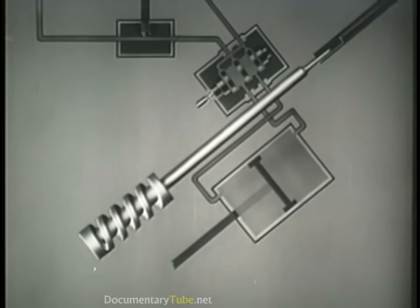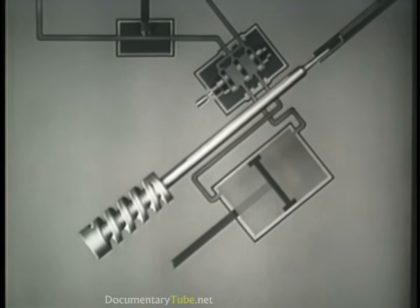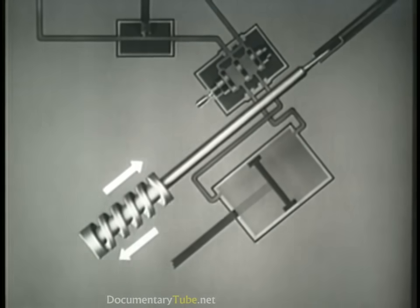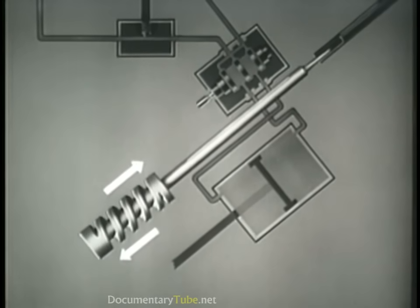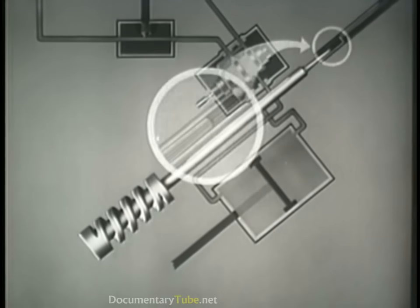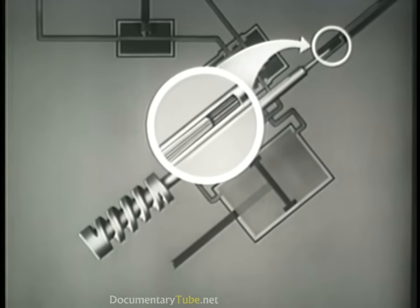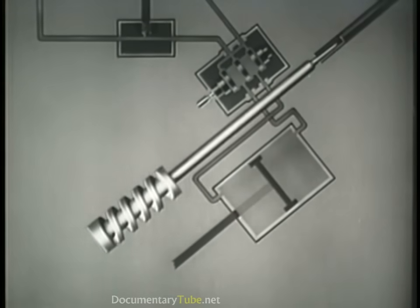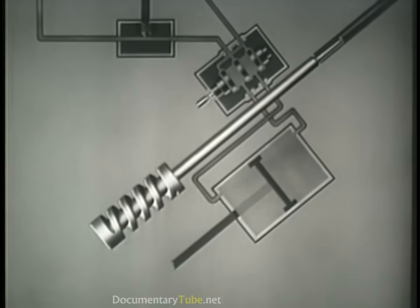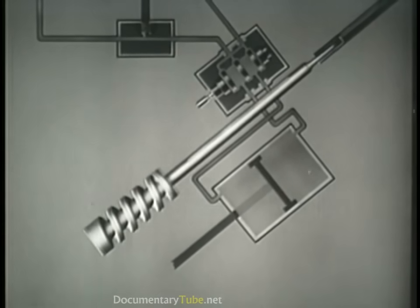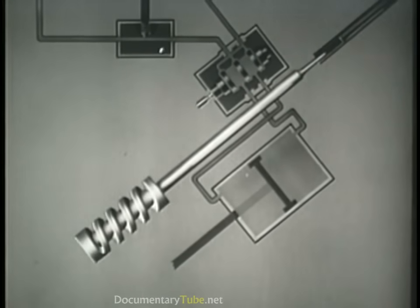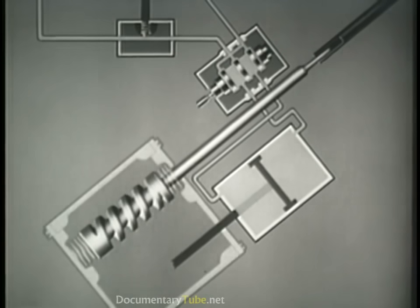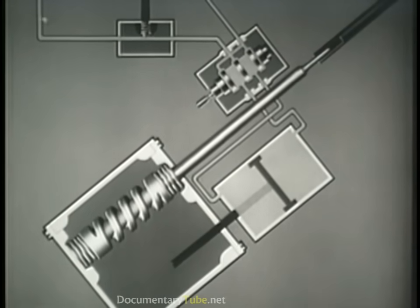In order for the hydraulic steering assist to operate, it is not only necessary for the cam to rotate, but it also must be able to move up and down. A spline connection makes this possible. Were it not for the splines, the steering wheel itself would move up and down.